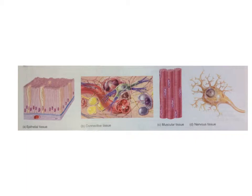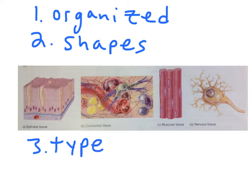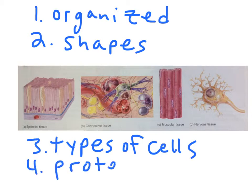Tissues are also often surrounded by some type of extracellular material, giving the tissue a unique composition, making them soft and gelatinous to hard and rigid. Tissues vary considerably in the way the cells are organized, the shapes of the cells, the types of cells within the tissue, and the kinds of protein fibers that help hold the tissue together.